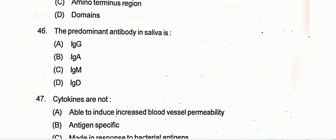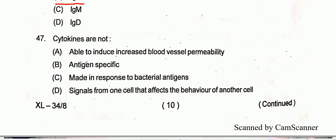Question number 45: Major variability of MHC is found in — Option A is the correct one, that is the alpha chain. Question number 46: The predominant antibody in saliva is IgA. Option B is the correct one.